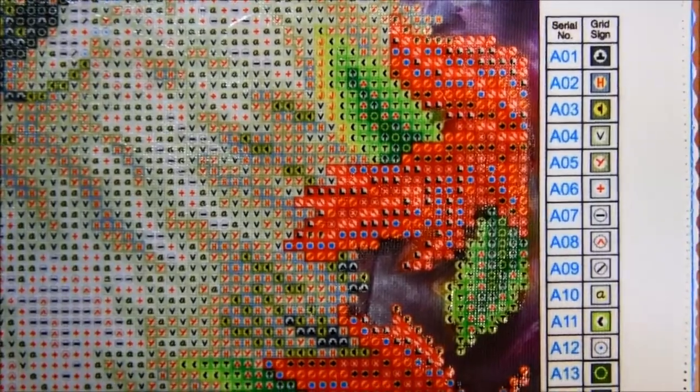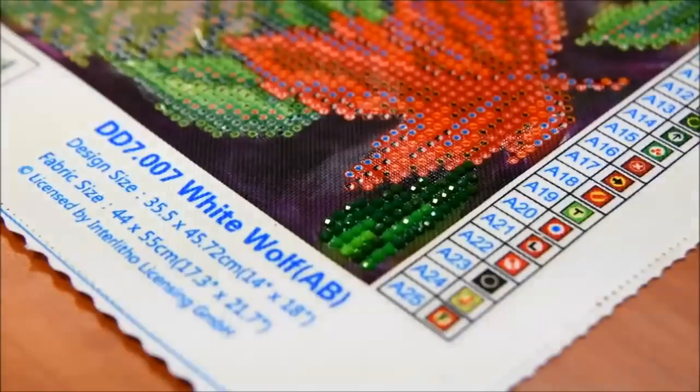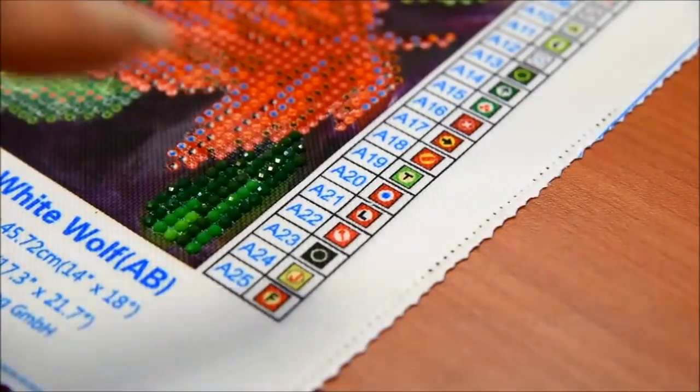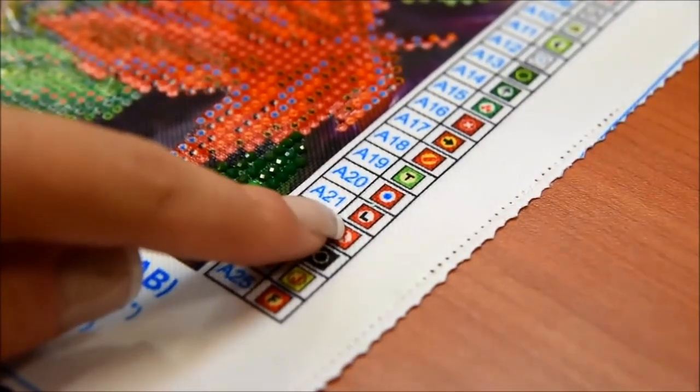The area to be worked with diamonds is printed in the form of a chart, similar to a counter-cross-stitch chart. Each colored diamond corresponds to a symbol on the chart.